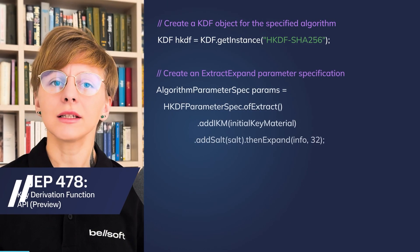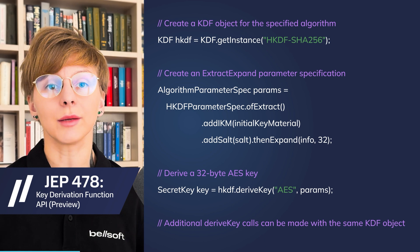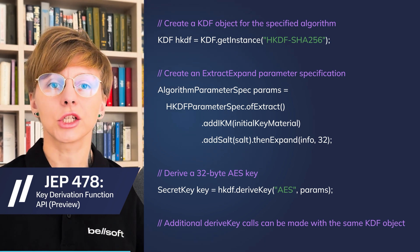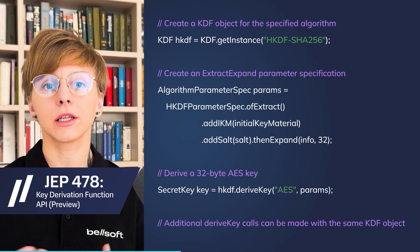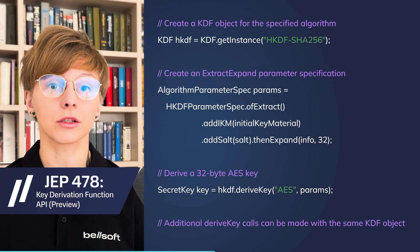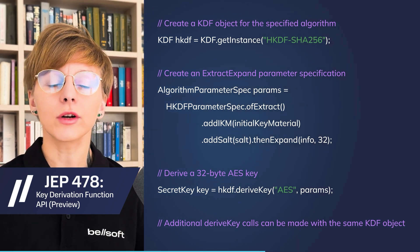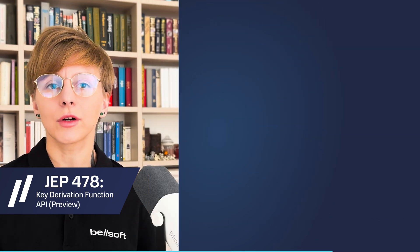JEP 478 introduces a preview of the key derivation function API. Prior to JDK 24, Java didn't have a specific API for using key derivation functions. Now, developers will be able to use more sophisticated password hashing functions. This is a step towards introducing post-quantum cryptography algorithms to the Java platform.